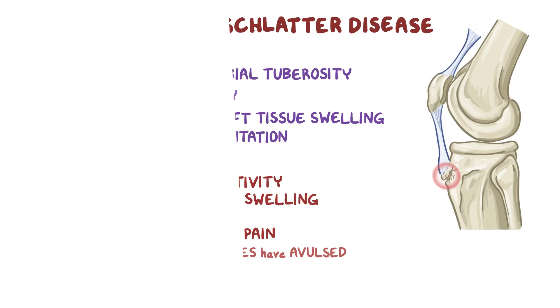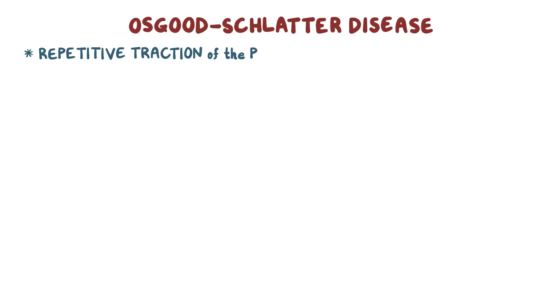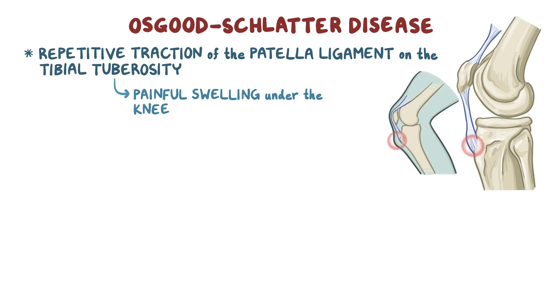As a quick recap, Osgood-Schlatter disease results from repetitive traction of the patellar ligament on the tibial tuberosity, causing it to become inflamed, which results in a painful swelling just under the knee.